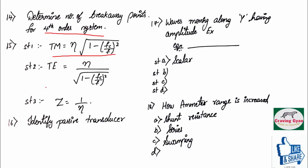Statement two. TE equals to eta divided by square root of 1 minus FC by FD whole square. True. Statement three. They have given Z equals to 1 divided by eta. It is false.